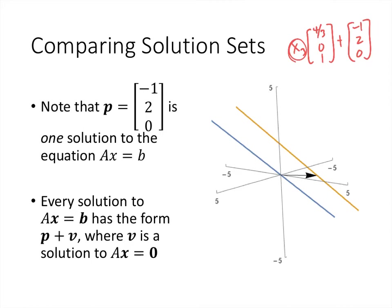In the picture, the black vector is p, the particular solution (-1, 2, 0). The blue line represents the solutions to the homogeneous system. If we take any vector v_h on that blue line and add it to p, we get a solution to the non-homogeneous system — represented by the orange line. The orange line is simply a shifted, or translated, version of the homogeneous solution set, shifted by the vector p.